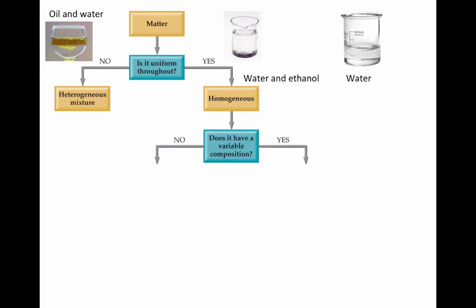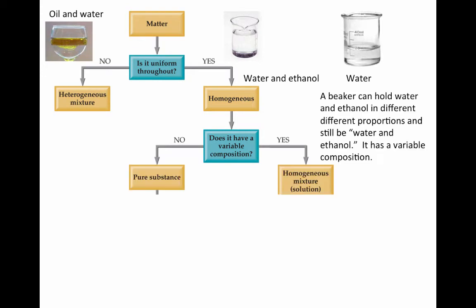Next question, does it have a variable composition? A beaker could hold water and ethanol in different proportions, and we'd still call it water and ethanol. This is what it means to say it has a variable composition. Water, however, is not like that. Every time we say that something is water, we're talking about precisely the same substance. Water and ethanol, we'd call that a homogeneous mixture, or a solution. Water is a pure substance.